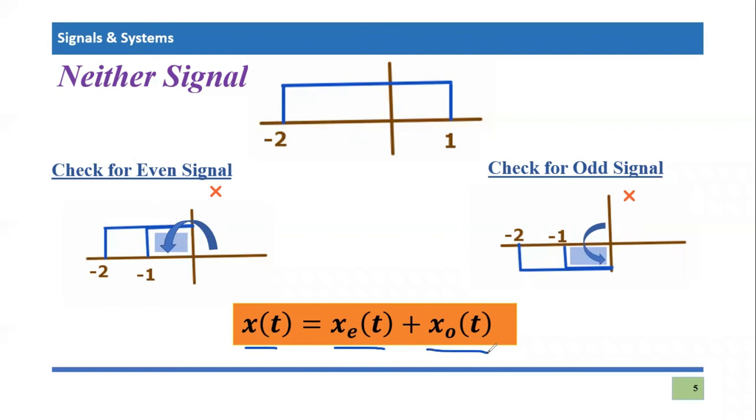So this neither signal has both combination, which have both parts. Even part and as well as odd part. So I hope you understand about the neither signal, a signal which is neither even nor odd that will be termed as neither signal. And in general, one can say that it has two different parts, even part and odd part.